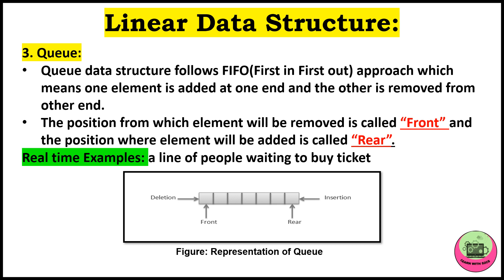Coming to the third one, queue. Queue follows the FIFO approach, that is first in first out. From one end the element will be added and from the other end it will be removed. The element from where it will be removed is called front, and from the element where it will be added it is called rear.